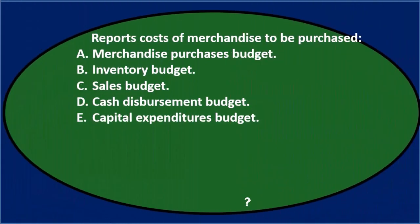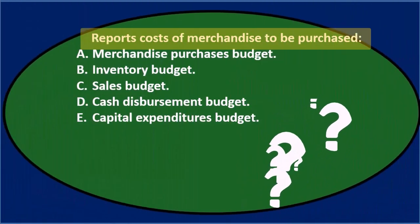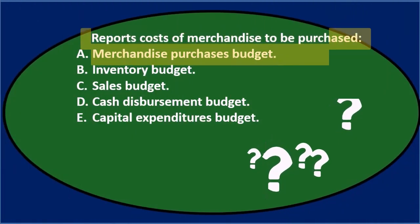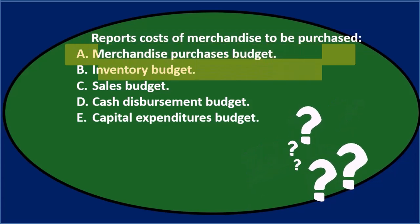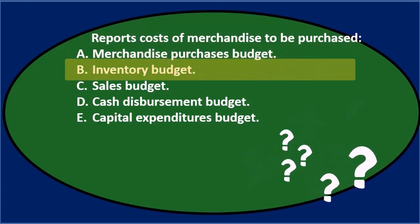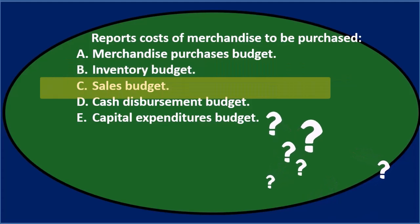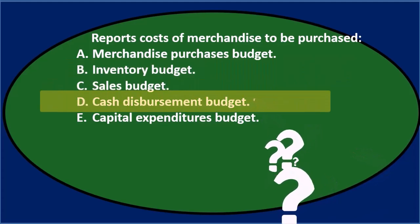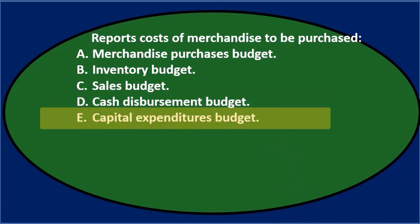First question: reports costs of merchandise to be purchased. A. Merchandise Purchases Budget. B. Inventory Budget. C. Sales Budget. D. Cash Disbursement Budget. E. Capital Expenditures Budget.